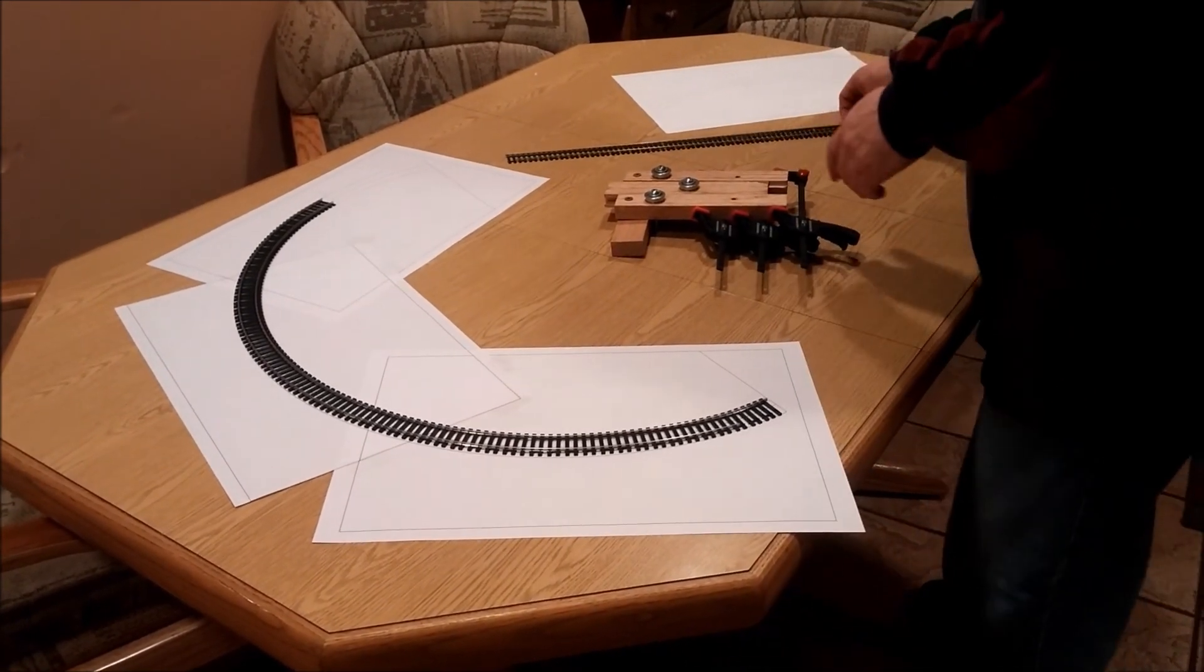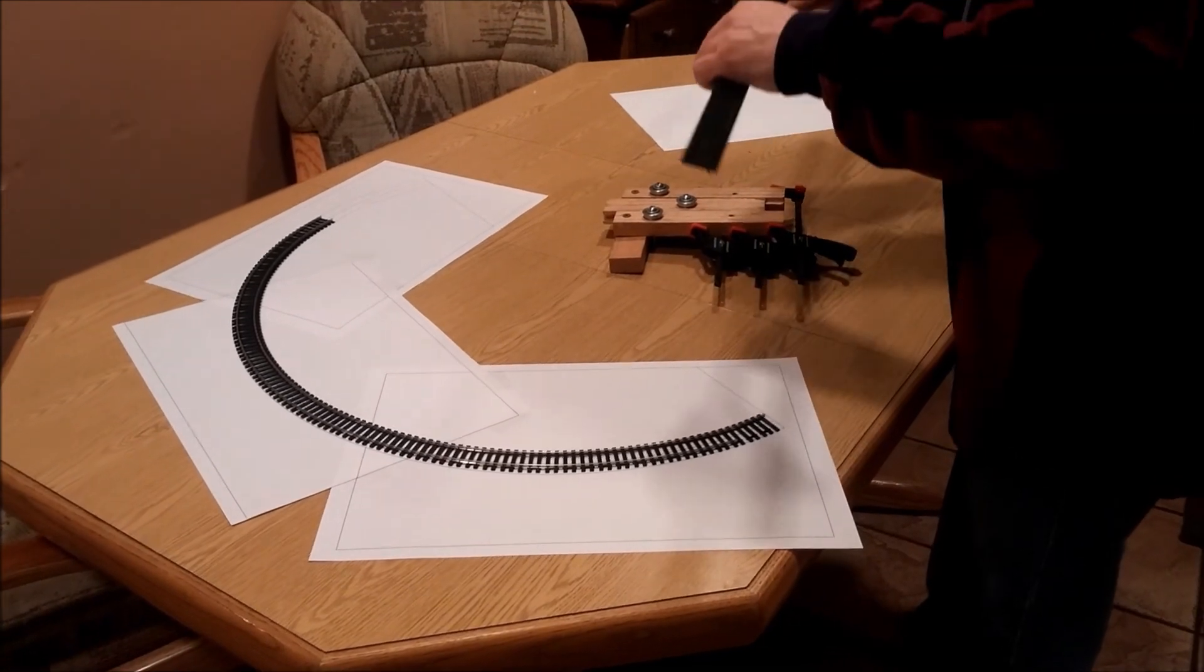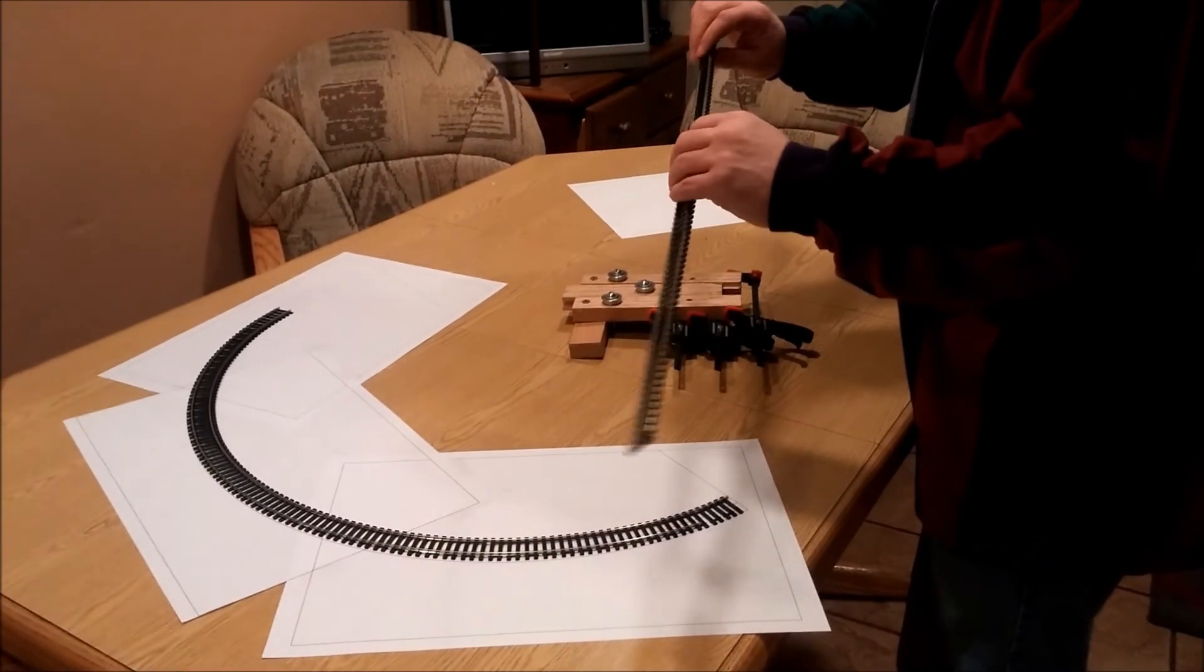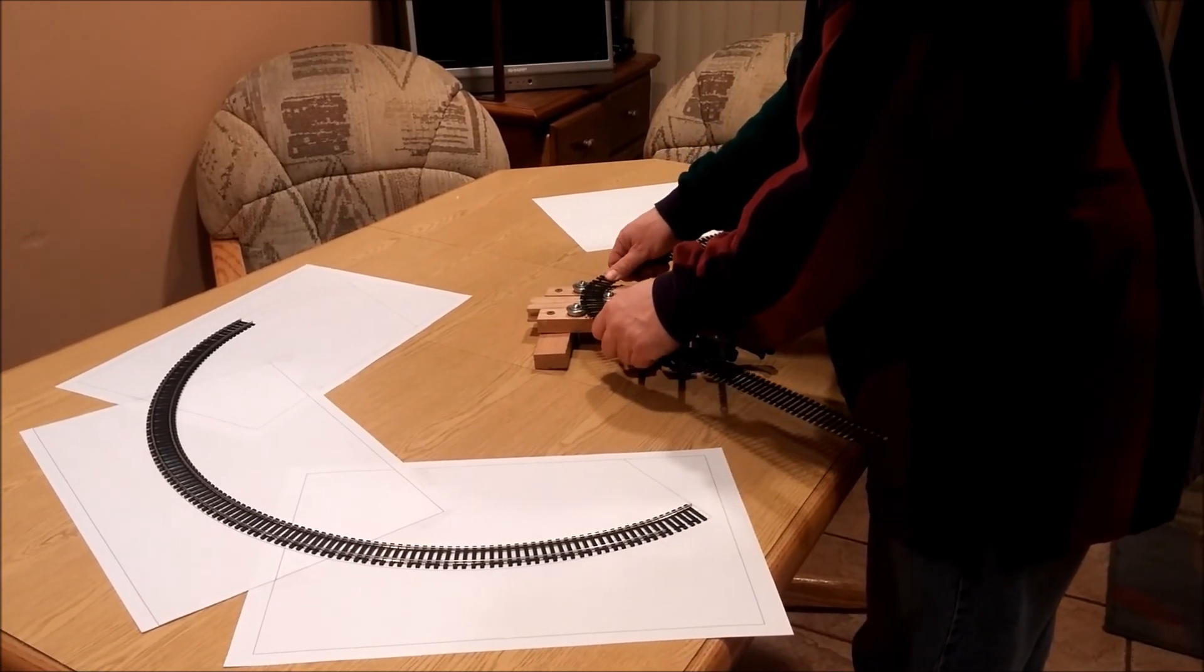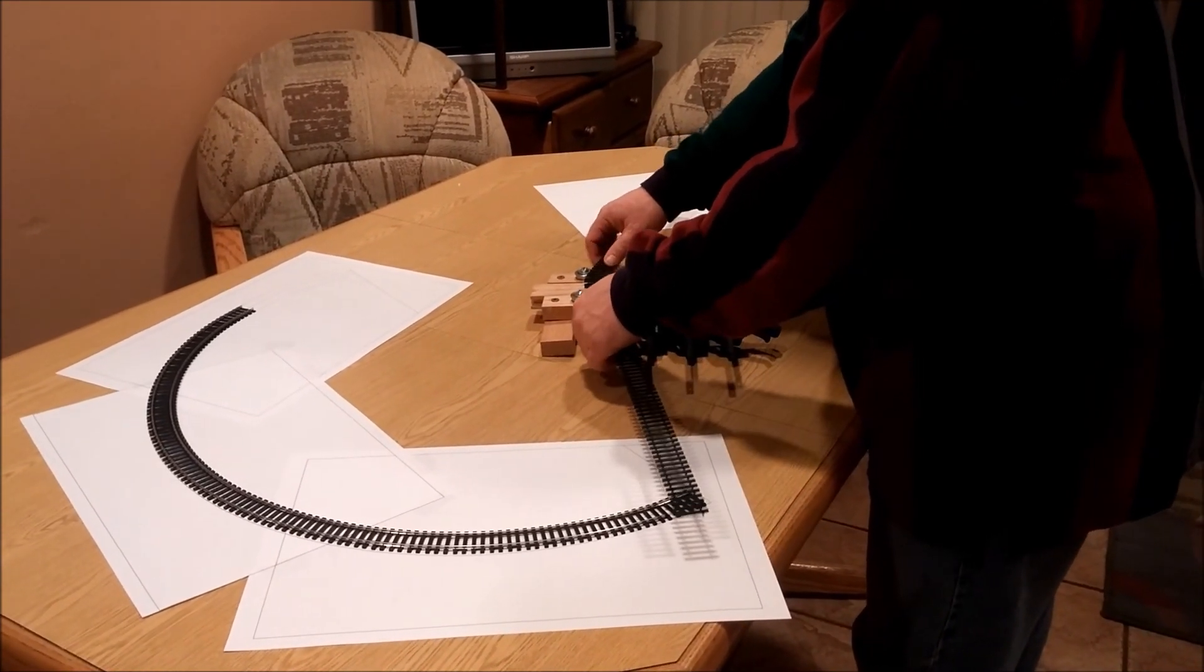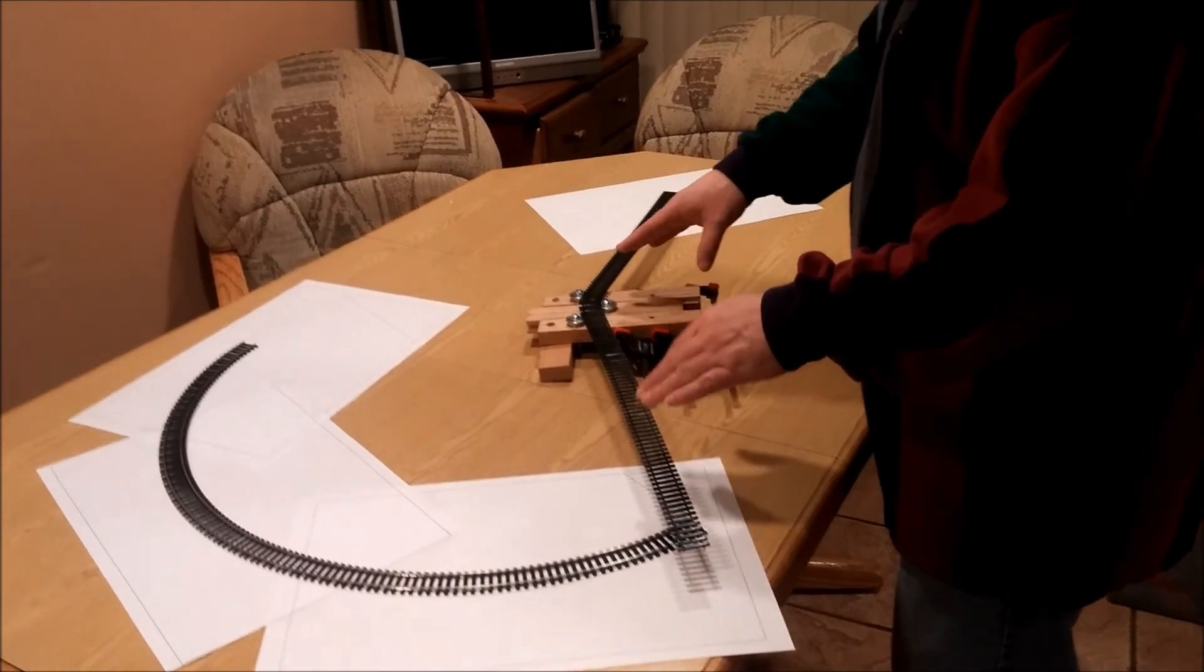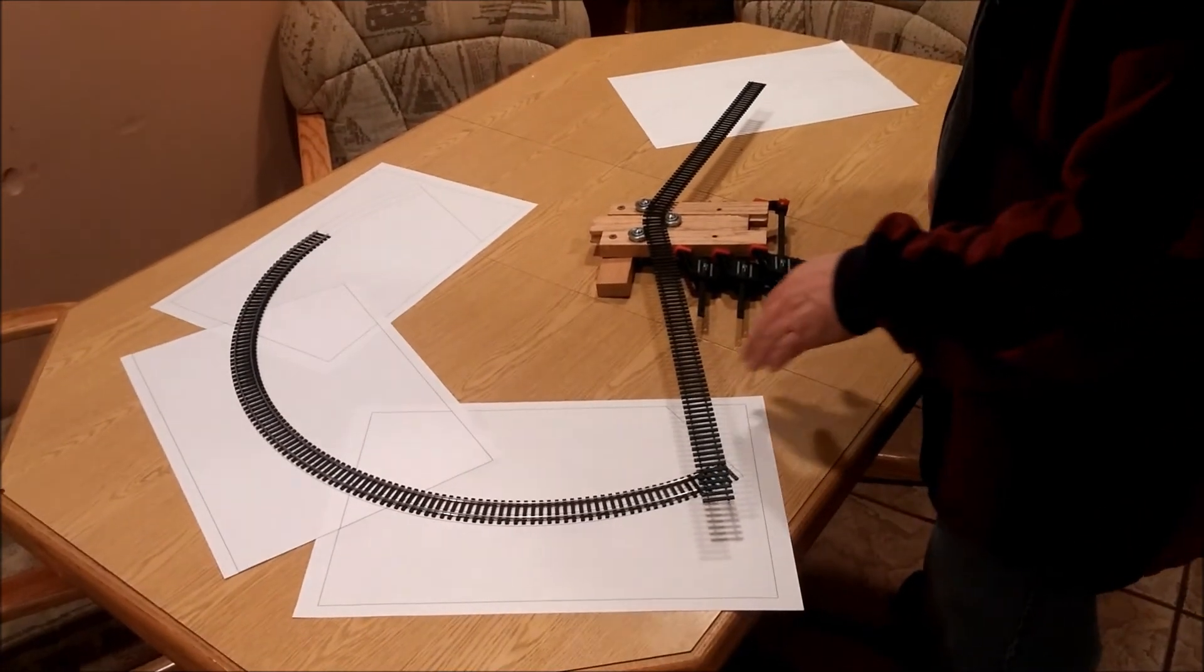I started with a piece of track. I like to bend with the flexible track, the moving track, on the outside. There's a lot of debate about that—some people do in, some people do out. I like it on the outside because that way you can keep opening, whereas if you do on the inside it can only close so far.